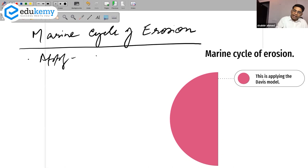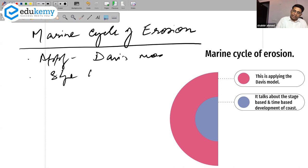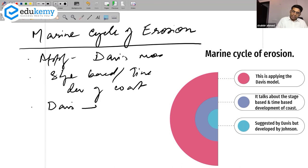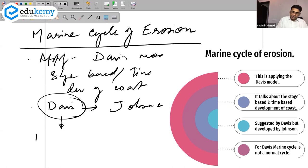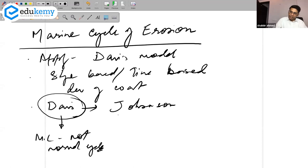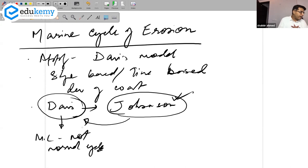Moving on to the marine cycle of erosion. This applies the Davis model and talks about the stage-based or time-based development of coasts. It was suggested by Davis, but the actual model was given much later by Johnson. For Davis, the marine cycle is not an example of a normal cycle. The Johnson model was more acceptable, but it is largely based on Davis's ideas.